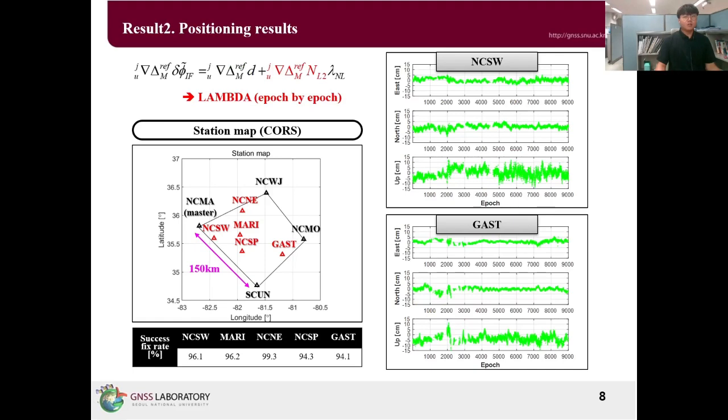The following results are obtained by resolving the ambiguities using LAMBDA method. All users demonstrated the high performance in ambiguity resolution, confirming the feasibility of the centimeter level positioning. This suggested that using the proposed method, Network RTK is expected to be feasible, even in the extended network with station distance over 100 km.